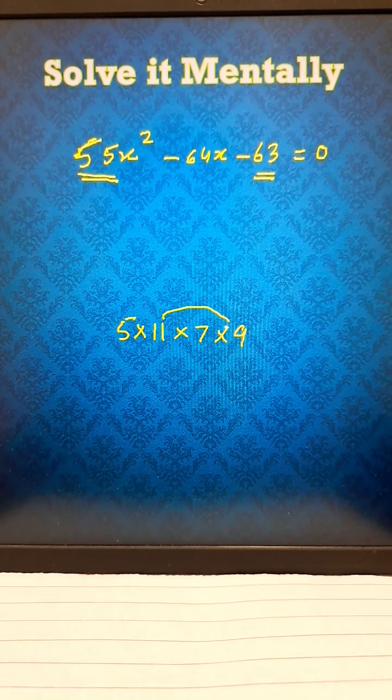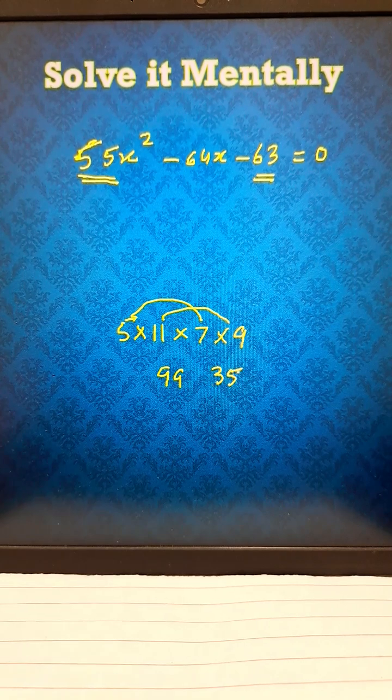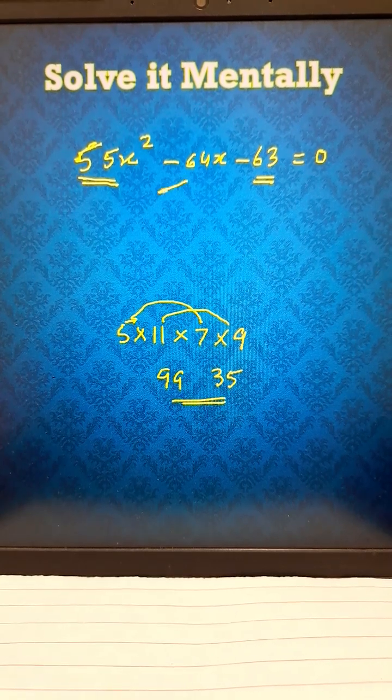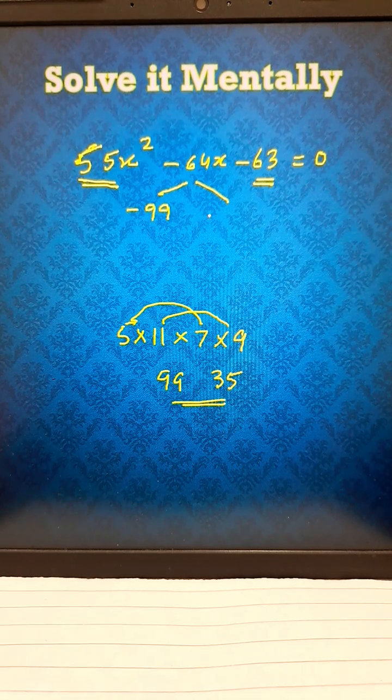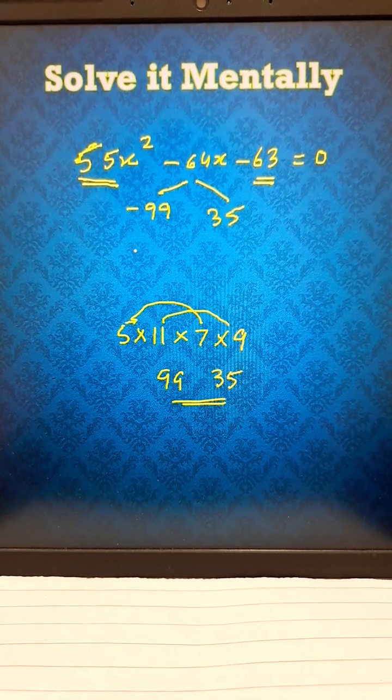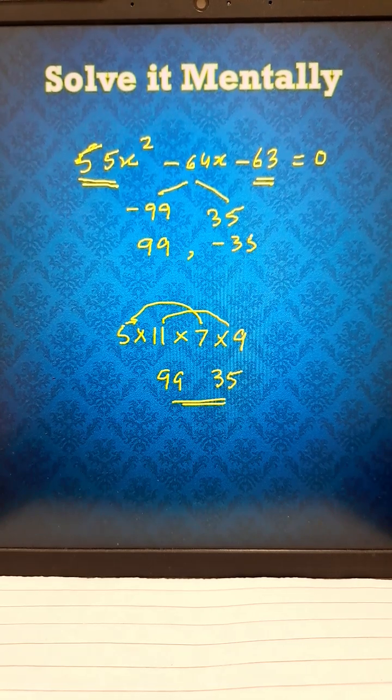Very easy. 11 times 9 is 99, and 7 times 5 is 35. These are the middle term split factors. So split the middle term: we have -99 and +35. Change the sign, we have 99 and -35.